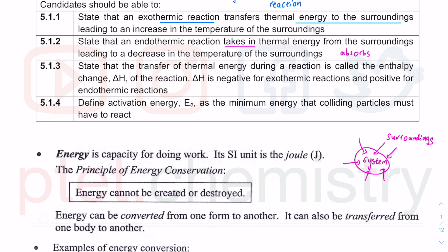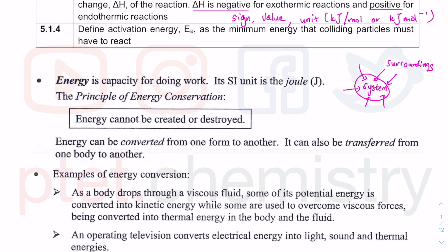This transfer of thermal energy is called the enthalpy change of the reaction. There is a sign and a value, and this is pronounced as delta H. Delta means change — it's a Greek word for change. Delta H is positive for endothermic reactions and negative for exothermic reactions. You must have a value and a unit, which is typically kilojoule per mole, written as kJ mol⁻¹.